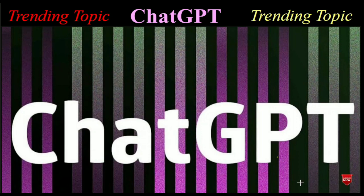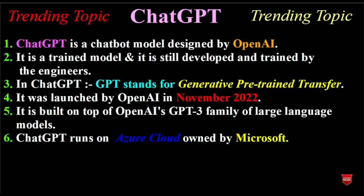First I will try to make you understand what is ChatGPT. ChatGPT is a chatbot model designed by OpenAI. It is a trained model and it is still developed and trained by their engineers. In ChatGPT, GPT stands for Generative Pre-trained Transformer. It was launched by OpenAI in November 2022.